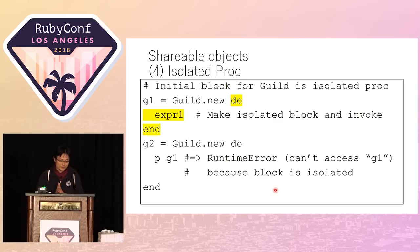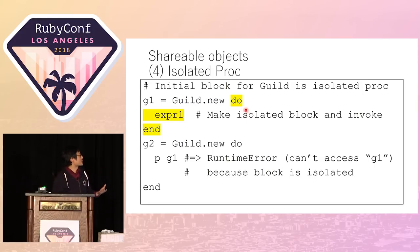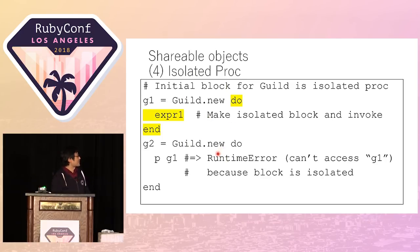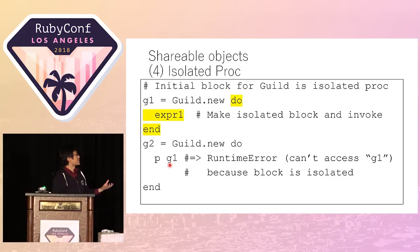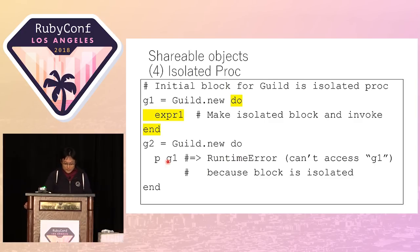With proc isolate, we can introduce a kind of shareable object. As shown in this small example, the passed block is transformed to an isolated block implicitly. In this case, the local variable G1 is an outer local variable, so accessing it raises a runtime error, because the block has been transformed to an isolated proc.